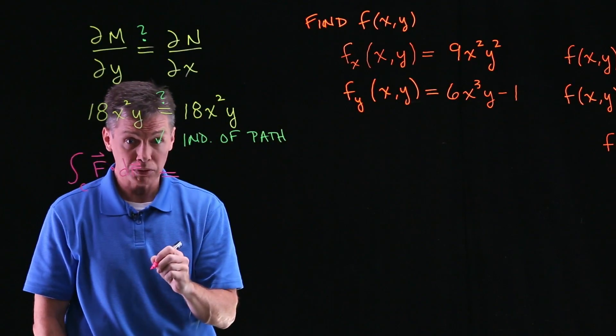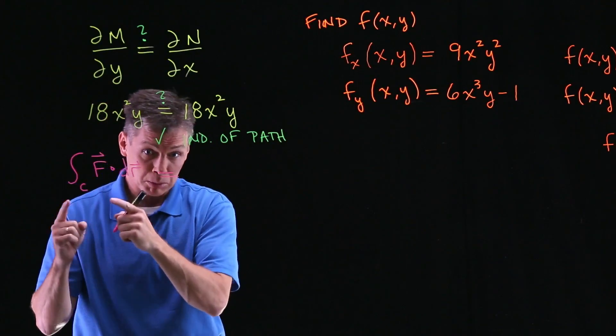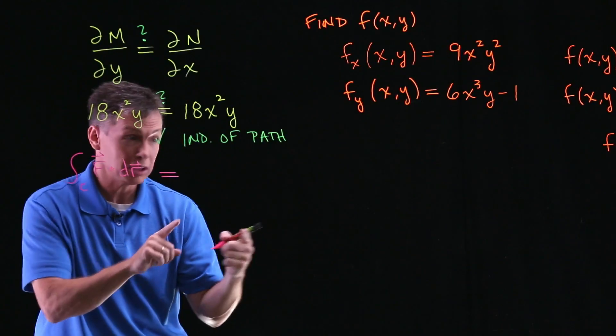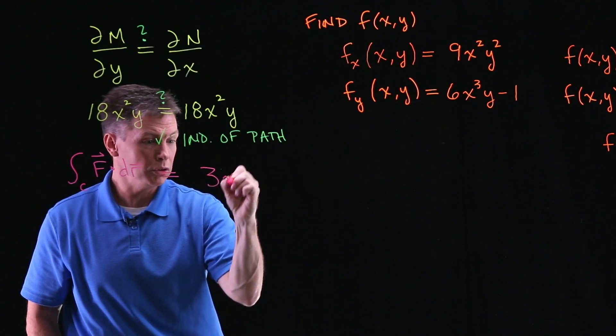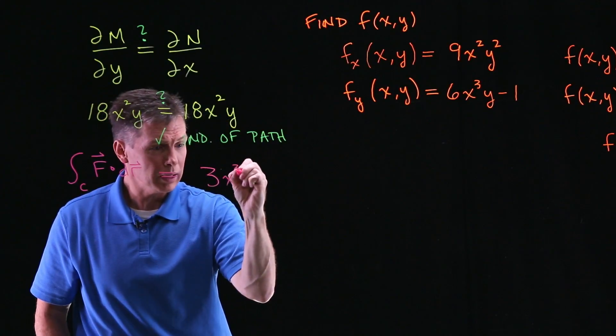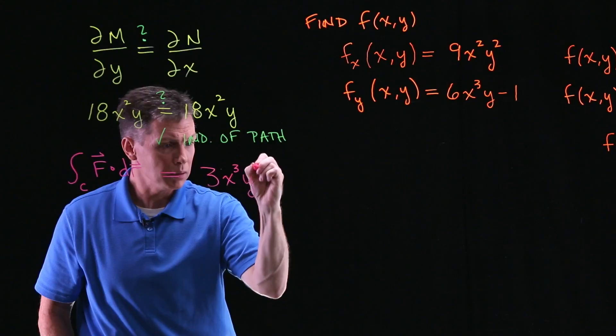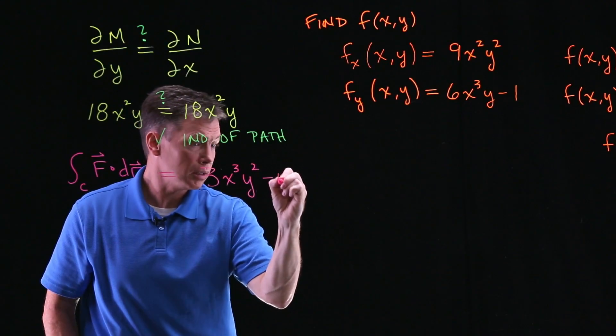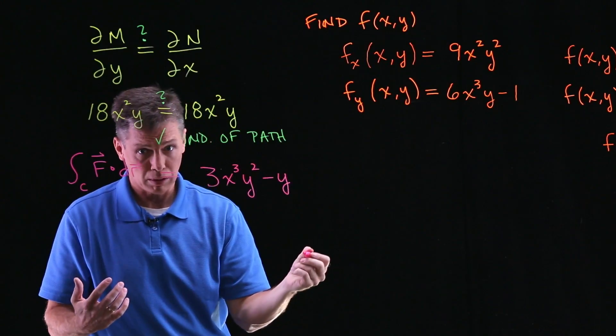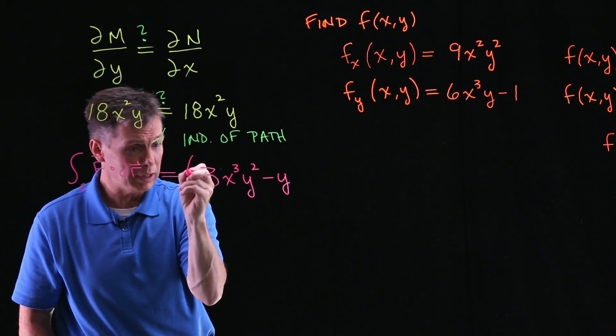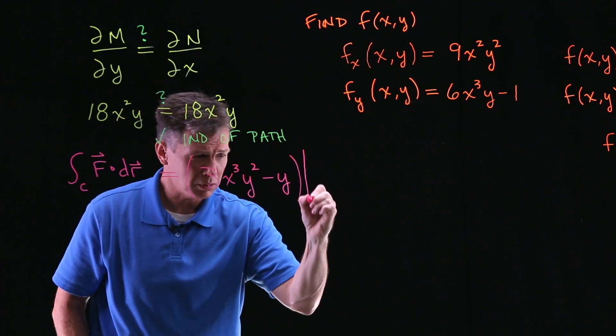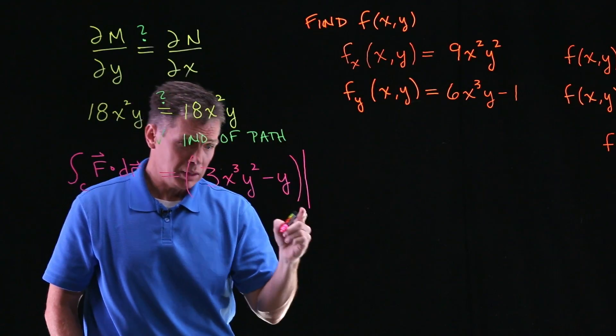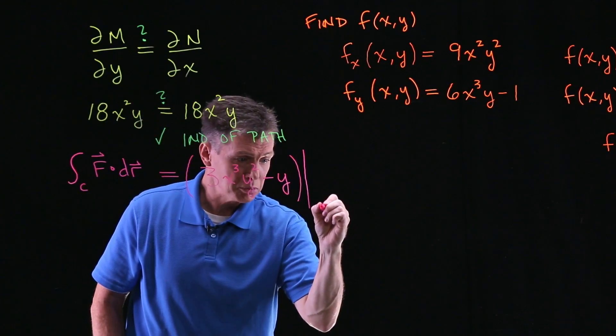Way back from calc one, so this integral equals, what we do is we jump right to f. Sorry, little f, we jump right to it, that 3X³Y² - Y. I'm not worried about the constant at all because this is a definite integral that we're going to evaluate. The constants, you know, they would subtract.